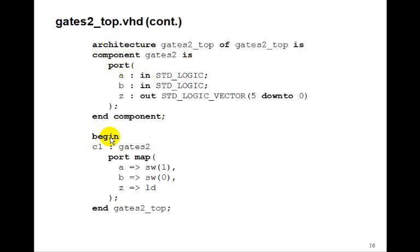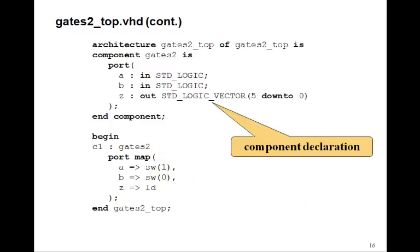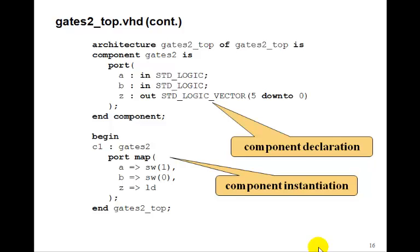So we need to connect our gates to these switches, and we do that in the architecture for this top-level design. Between the word architecture and the word begin, we must include a component declaration of all the components we have, in this case just Gates2. And in Gates2, remember the two inputs were called A and B, and the output was Z. Then in the main architecture part of the top-level design between begin and end, we use this port map statement. So we have the component declaration, and we have the component instantiation, where we define this label, C1, an arbitrary label, Gates2, that's the name of this component.